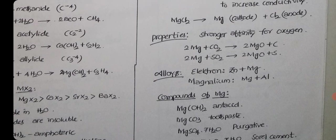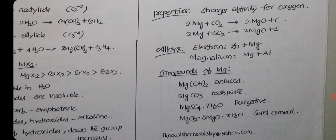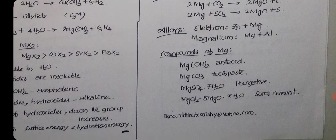NaCl and CaCl2 type of compounds are added to reduce melting point and increase conductivity. Properties: it has stronger affinity for oxygen, so immediately reacts with any other which have oxygen and reduces them. Carbon dioxide is reduced to carbon, sulfur dioxide is reduced to sulfur. Its alloy is Elektron, formula is Zn-Mg. Magnalium, it's an alloy, magnesium plus aluminum. Compounds of magnesium: magnesium hydroxide is antacid. Magnesium carbonate is used in toothpaste. Magnesium sulfate 7H2O is purgative. Purgative means loose motions causing one.